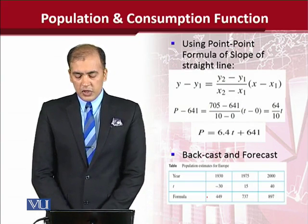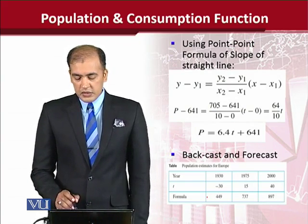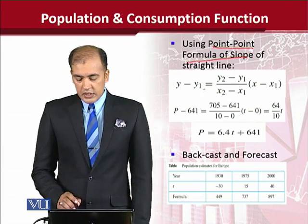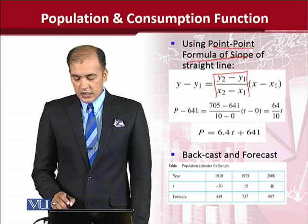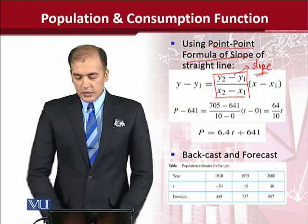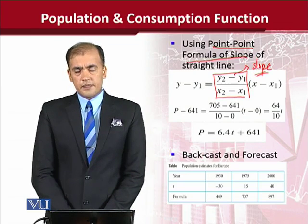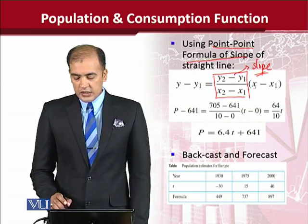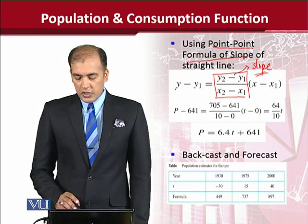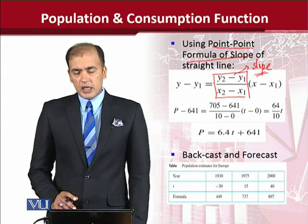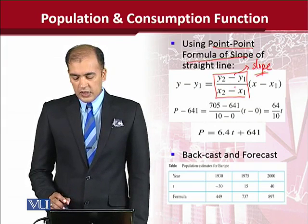We use the point-point formula for the slope of a straight line, which gives the slope m as the difference in y-values over the difference in x-values. The corresponding equation uses y minus y1 and x minus x1, forming the standard point-point form of a straight line using the slope and the coordinates.